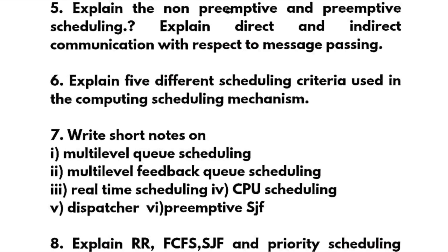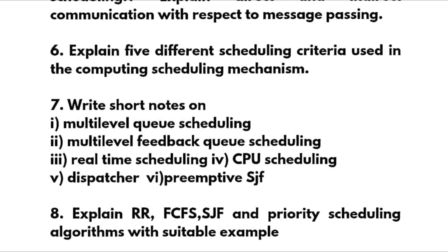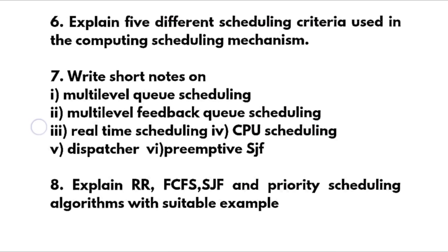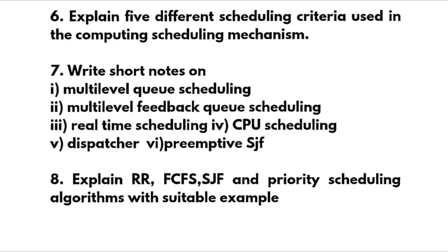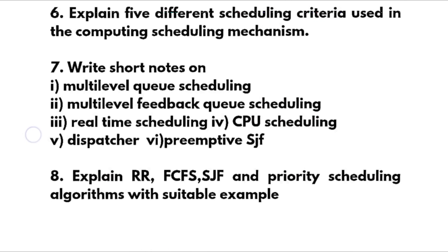Explain five different scheduling criteria used in the CPU scheduling mechanism. Write short notes on: multi-level queue scheduling, multi-level feedback queue scheduling, real-time scheduling, CPU scheduling, and dispatcher. Last ones: preemptive SJF (shortest job first), round-robin, first-come-first-served, shortest job first, and priority scheduling algorithms with suitable examples. This is all about module 2. For the problematic part, you have to refer some previous year question papers of 18 scheme and also the current scheme.